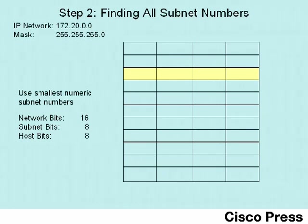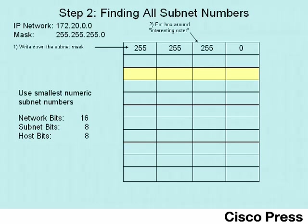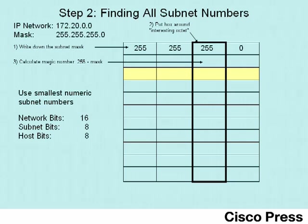Let's use the process described in ICND1 Lab 6 to find all the subnet numbers. If you haven't watched Lab 6, it's probably good to go back and watch that first. First we write down the subnet mask in the first row of the table, then put a box around the interesting octet — the third octet, which contains the entire subnet field. Then we calculate the magic number: 256 minus the mask's value inside that rectangle. So we get 256 minus 255, which equals 1. The magic number is 1. To kickstart the process, we write down the network number again, because the zero subnet is always the same numeric value as the classful network number.